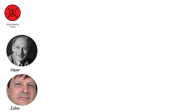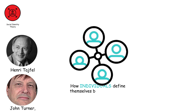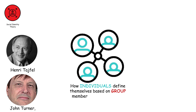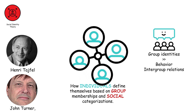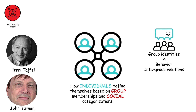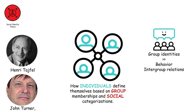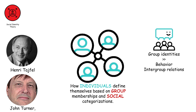Social identity theory, developed by Henri Tajfel and John Turner, explores how individuals define themselves based on group memberships and social categorizations. It investigates how group identities influence behavior and intergroup relations.